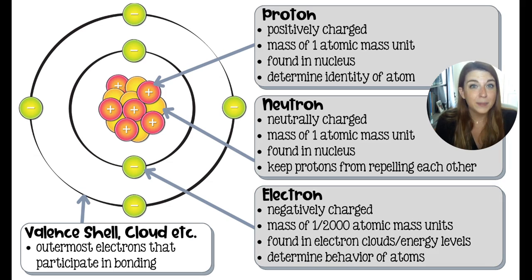Now, there are some special electrons, and those are the ones on the outside. We call them the valence electrons. And they live in the valence shell, or the valence cloud, or the valence energy level. The valence just means the last one. Those electrons are the ones that are the most important.